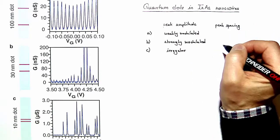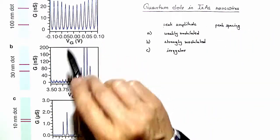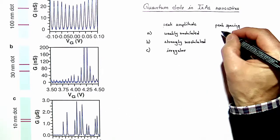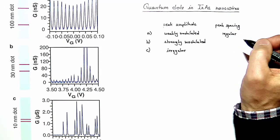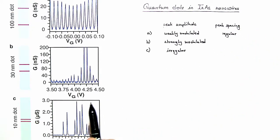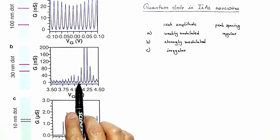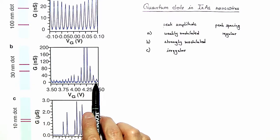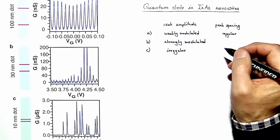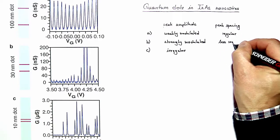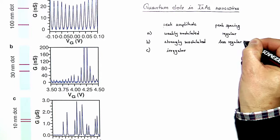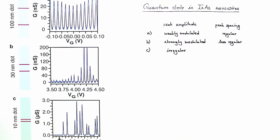The peak spacing in case A looks very regular. In case B we already see small fluctuations — here we have a larger spacing, here a smaller spacing — but the overall impression is still quite regular, so let's say it is less regular. In the third case, the peak spacing appears to be quite irregular.